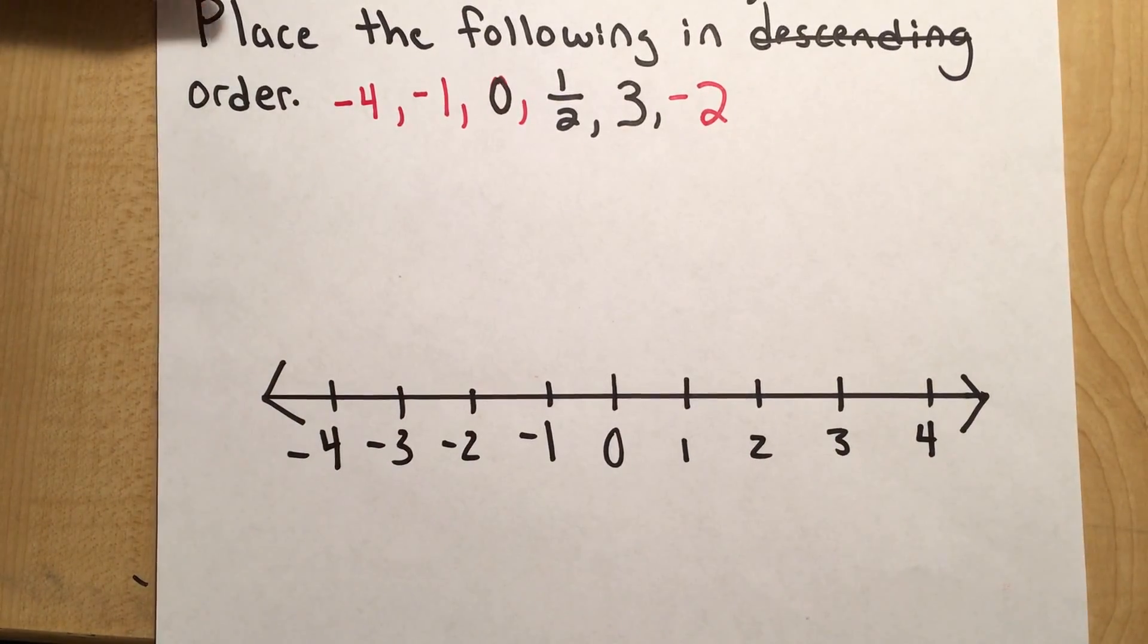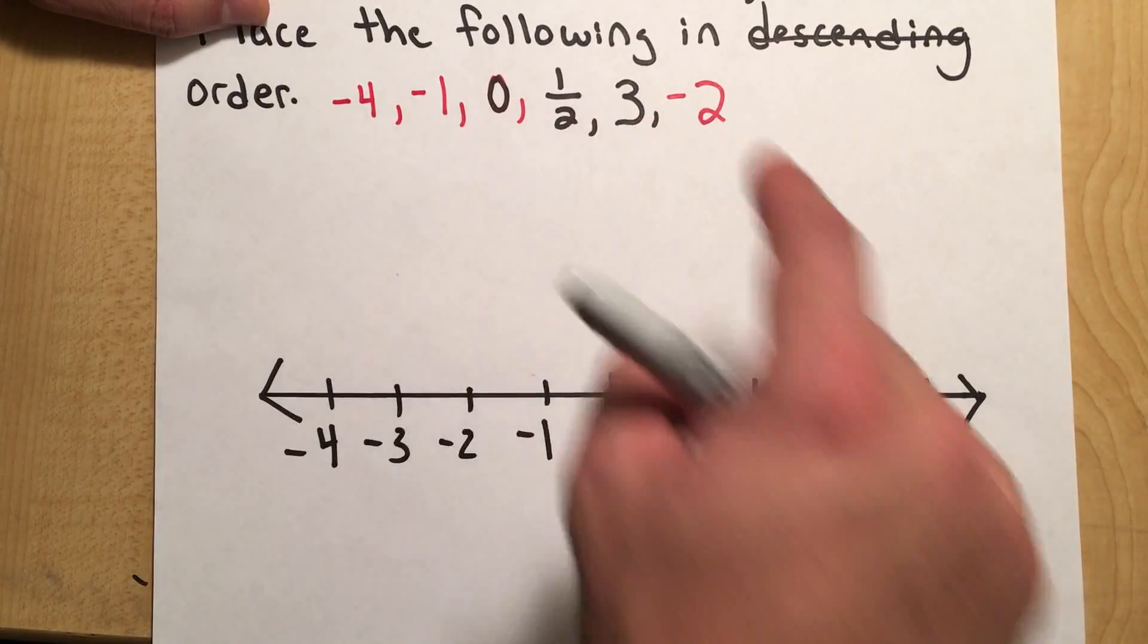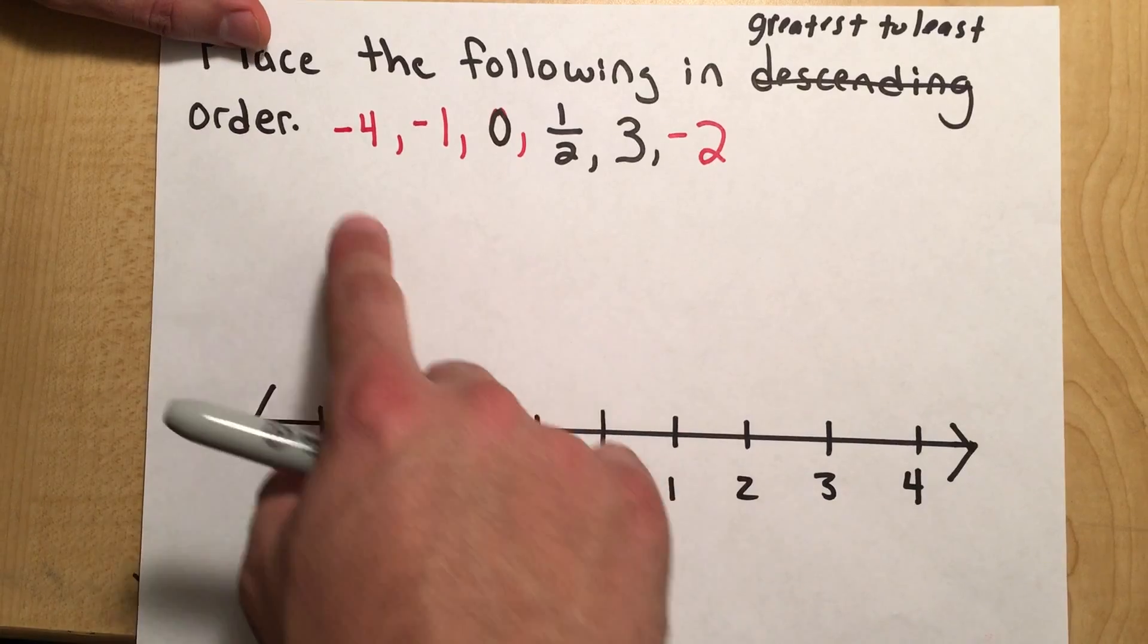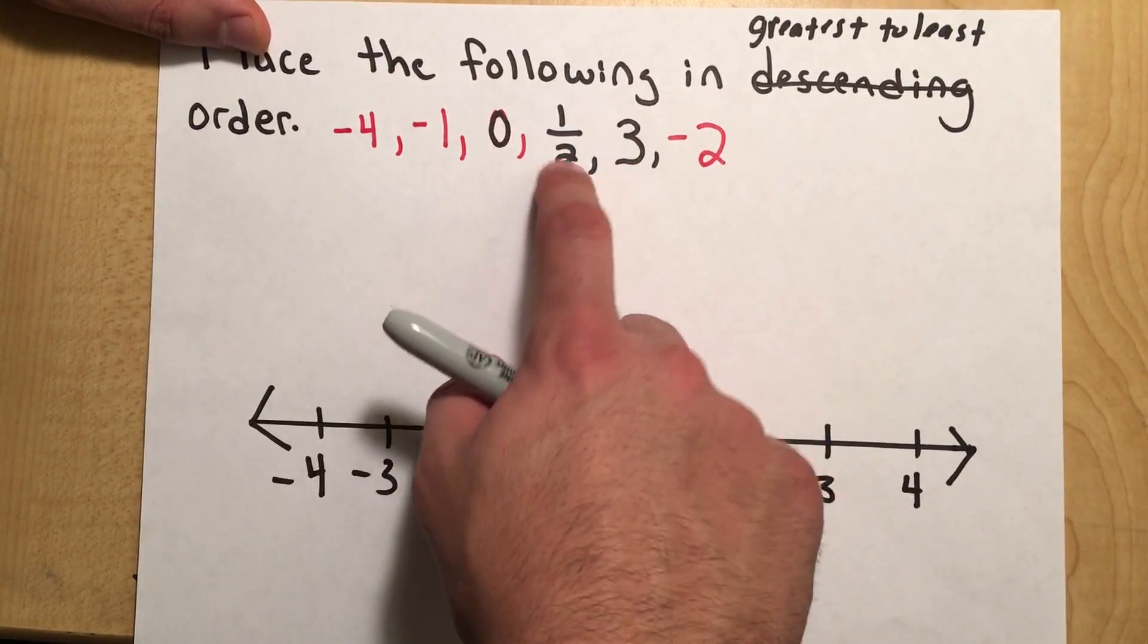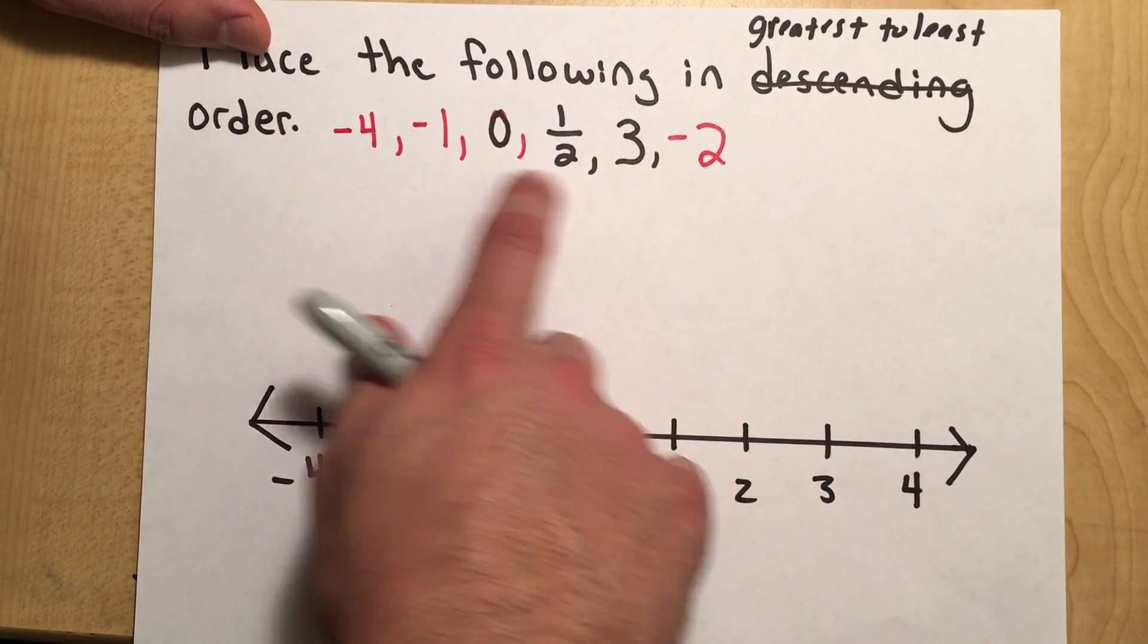And so here, this is interesting because now we have a mixture of fractions, integers, and positive numbers. So let's start by plotting the ones that we do know and then we'll leave the fraction until the end.